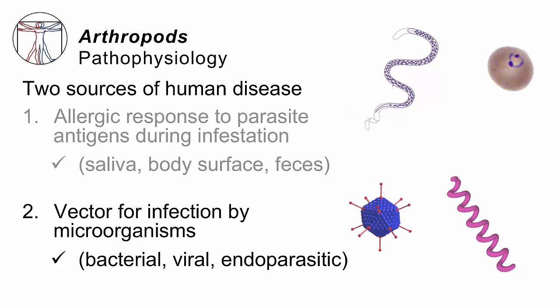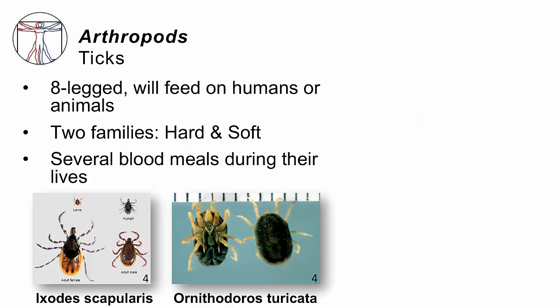Now, that's the allergic response. But the other reason these things can get you sick is because they can serve as vectors for infections. So many of the other classes of germs in this course — bacteria, viruses, other parasites — can be spread to humans through the bite of these arthropods. When that happens, the arthropod is called a biologic vector.